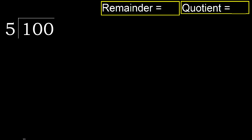100 divided by 5. 1 is less, therefore next. 10 is not less, therefore with 10. 5 multiplied by which number is nearest to 10, but not greater?